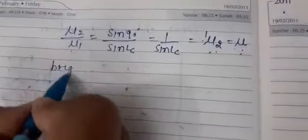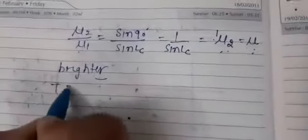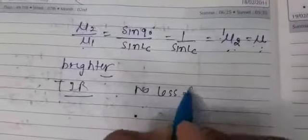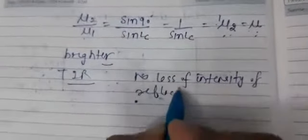Images formed by total internal reflection are brighter than those formed by mirrors or lenses. This is because in total internal reflection there is no loss of intensity — 100 percent of the light is reflected back into the same medium. In contrast, mirrors and lenses cause some loss of intensity of light, so images formed by total internal reflection are brighter.